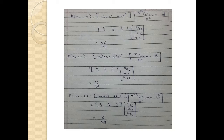Substituting j=0, 1, 2: P(X2=0) = initial distribution times the 0th column of P²; P(X2=1) = initial distribution times the 1st column of P²; P(X2=2) = initial distribution times the 2nd column of P². The resulting probability distribution of X2 is 26/48, 16/48, and 6/48.